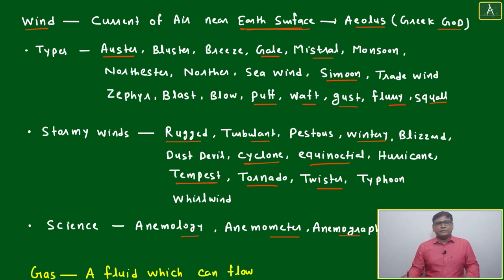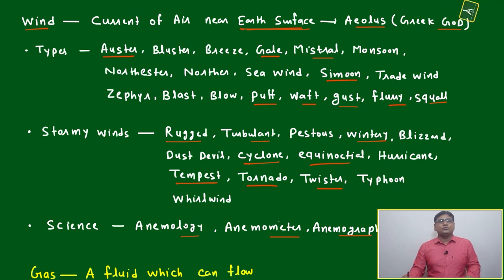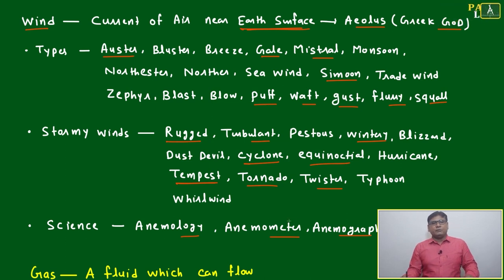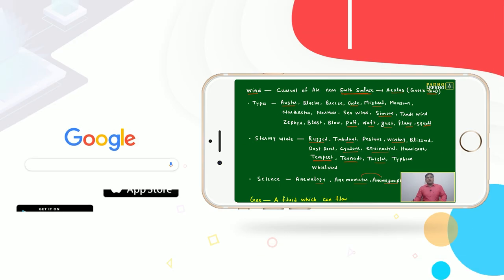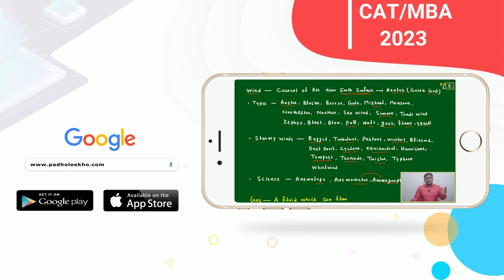The science dealing with wind is anemology. Instruments used include the anemometer. Recording produced by an anemometer is called anemography. These are all tools or instruments used to study wind.